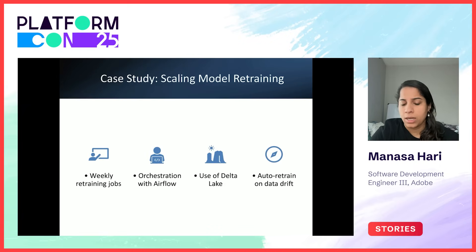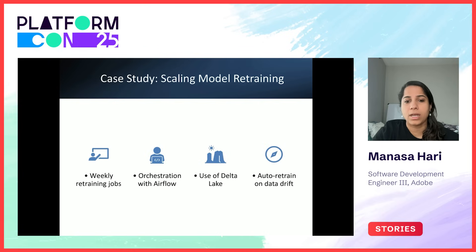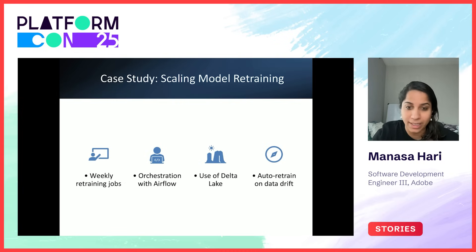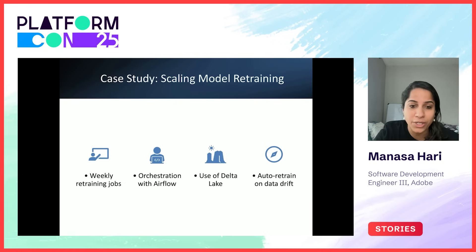Let's look at a case study: a project that requires a weekly model retraining job. Engineers typically used to manually kick it off, and that was fragile. To make the system scalable, the options were to switch to Airflow to orchestrate tasks rather than manual triggering, and use Delta Lake to ensure consistent data versions. To make it smarter, we can set up automatic retraining triggers when data drift exceeds a threshold. This improves both reliability and model freshness, reduces human intervention, and allows the system to self-heal in the face of upstream changes.